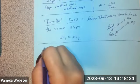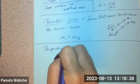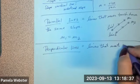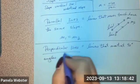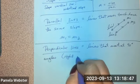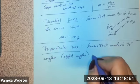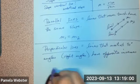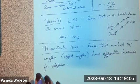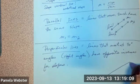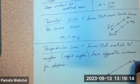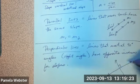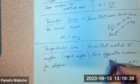The second relationship is perpendicular lines. Some of you may have seen this before, but just as a reminder, perpendicular lines are lines that meet at 90 degree angles, or a right angle. They have opposite inverses for slopes. So if line one goes this way with M1, and the two lines meet at 90 degree angles, this little square here reminds me that that's a right angle. Line two has slope M2.